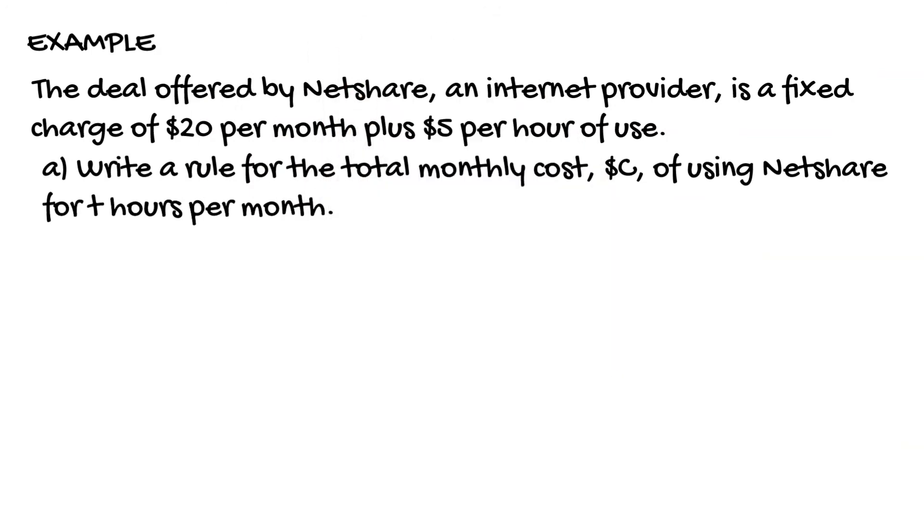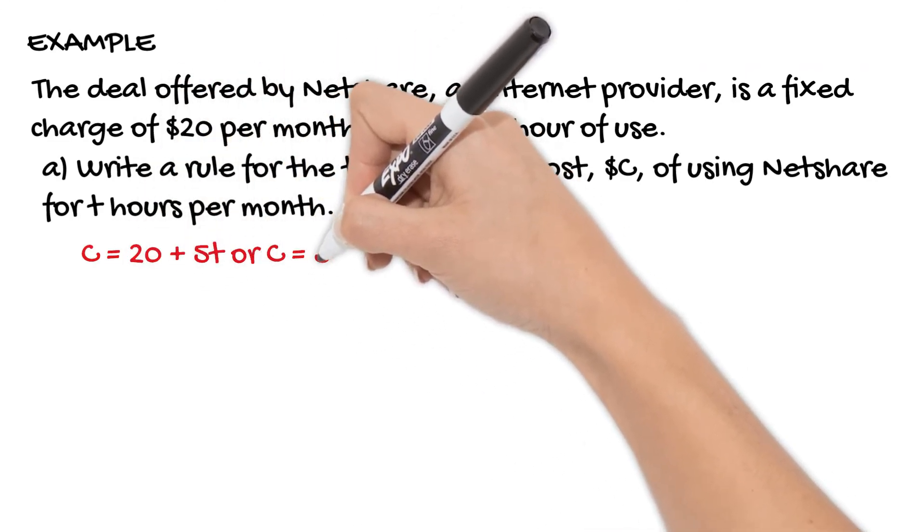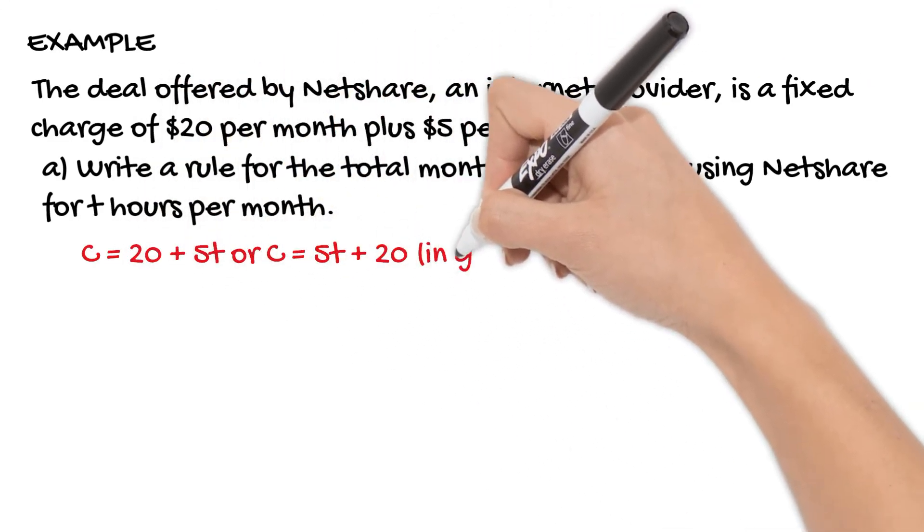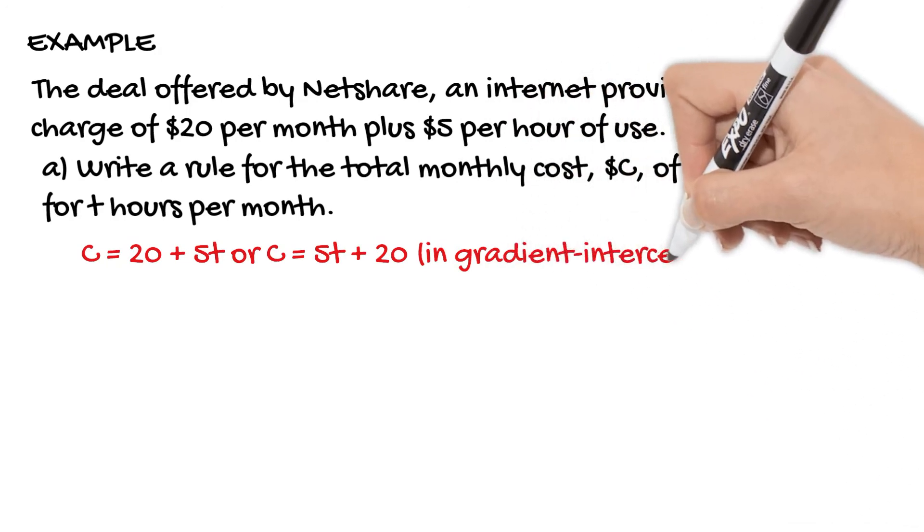So that's going to look like our cost equals 20 plus 5 multiplied by our time. It's a fixed cost of 20, so that's our constant, plus $5 for every hour. Writing that in gradient intercept form, that would look like C = 5T + 20.